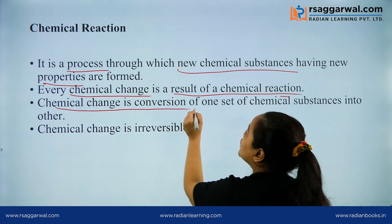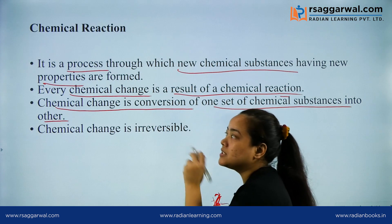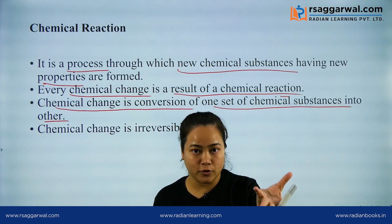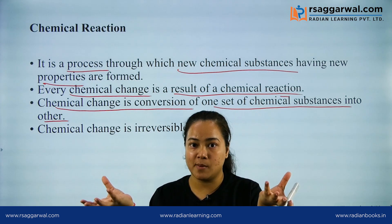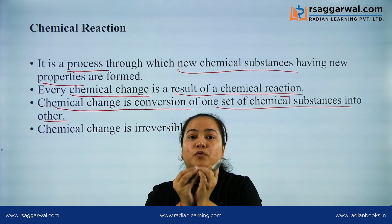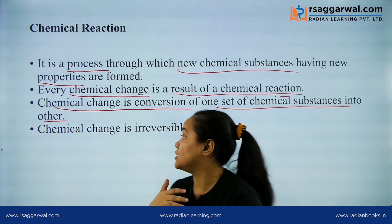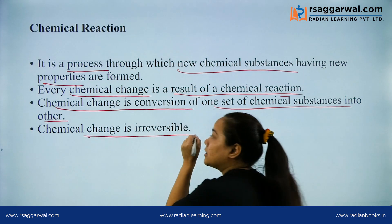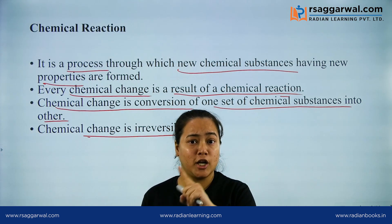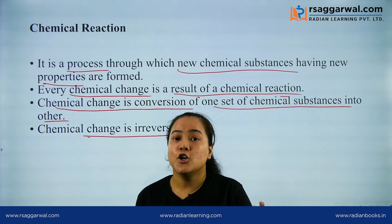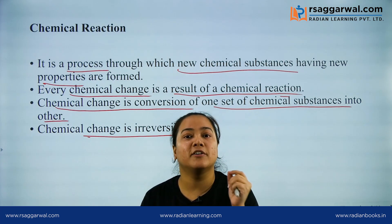Chemical change is the conversion of one set of chemical substances into another. If you take one set of chemical compounds and react them with different chemical compounds, they will react to form completely different chemical compounds. Chemical change is irreversible. Once your milk is getting converted to curd, you cannot get back milk from the curd. So chemical change is a permanent change — it cannot be reversed.